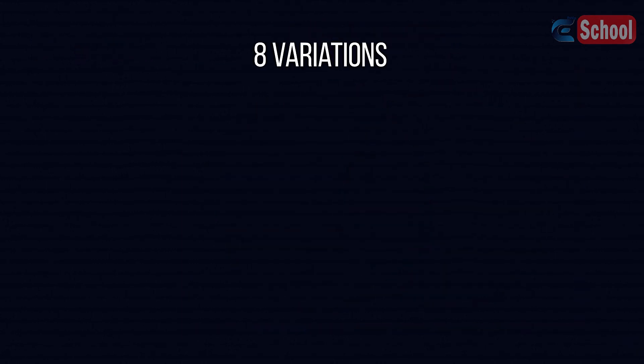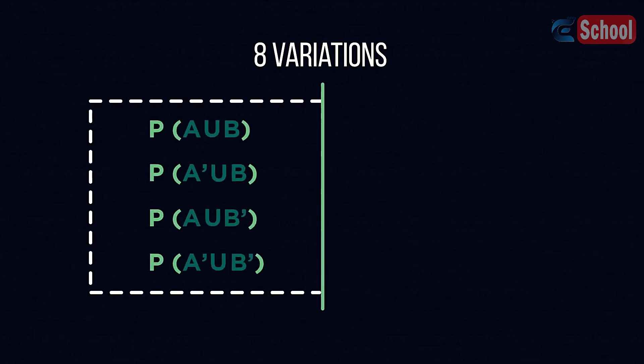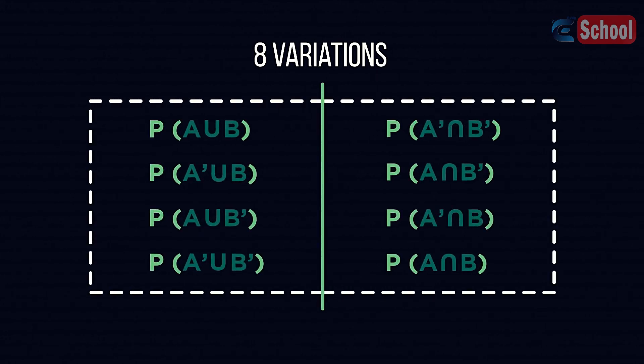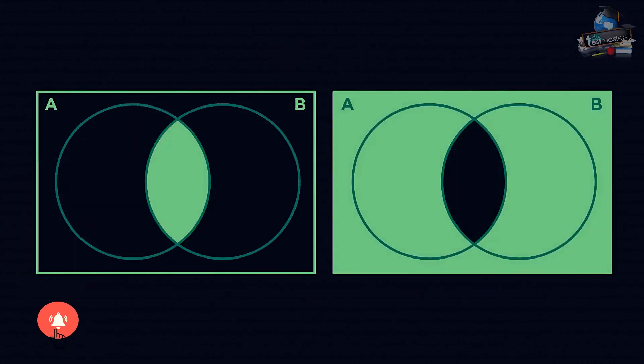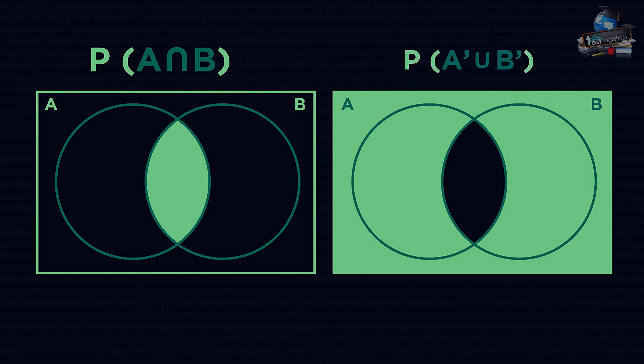Overall, there are eight variations of combination. If you can remember four, the other four are the opposites for A, B and the link symbol. For example, this is P(A) intersection B. Notice the shaded shared section. The inverse area, within the universal set, has the opposite notation. So A and B gain apostrophes, and intersection becomes union: P(A') union B'.